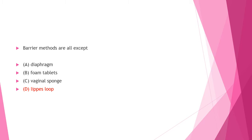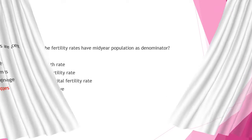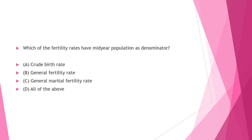Next question: Which of the fertility rates have mid-year population as the denominator? Option A: crude birth rate, Option B: general fertility rate, Option C: general marital fertility rate, Option D: all of the above. Answer to this question is Option D: all of the above.